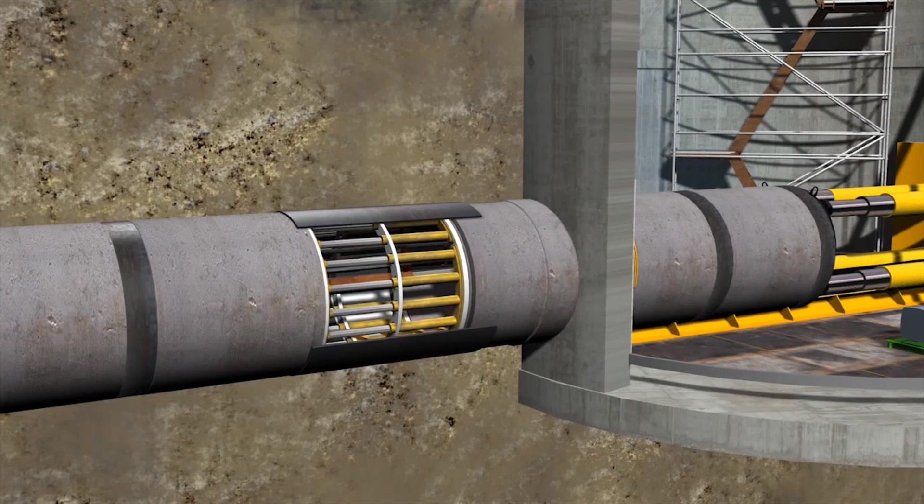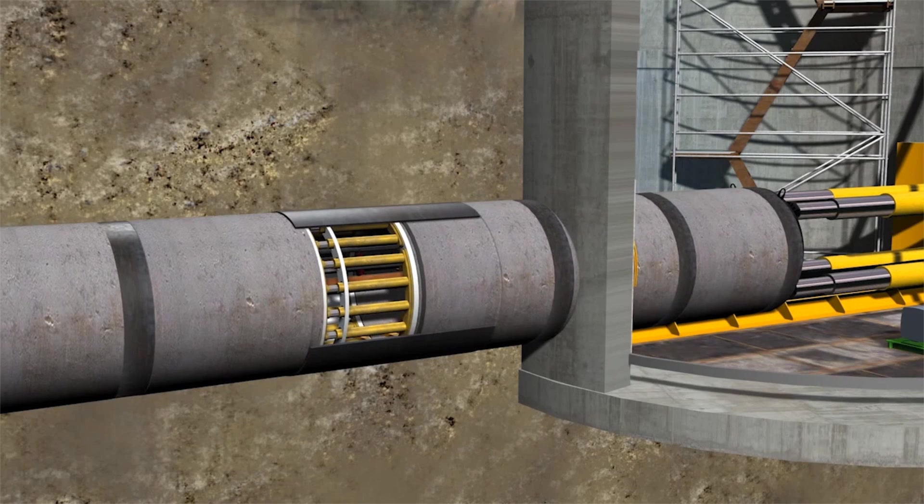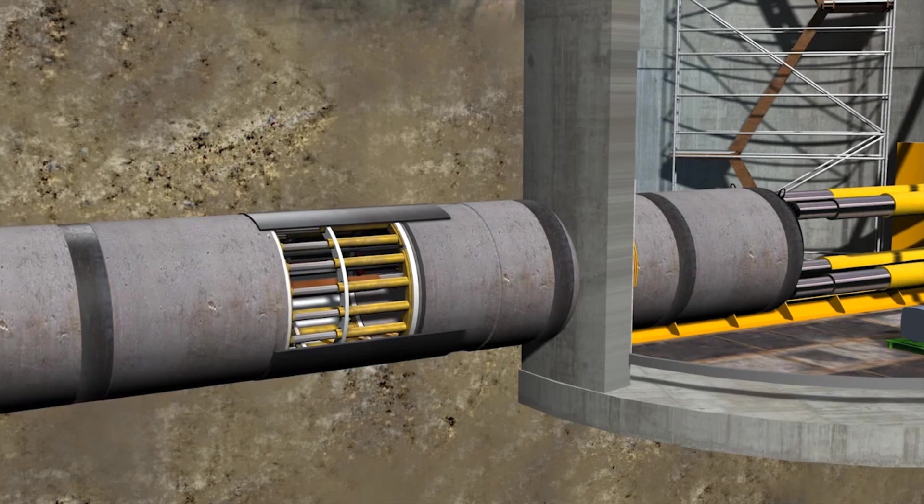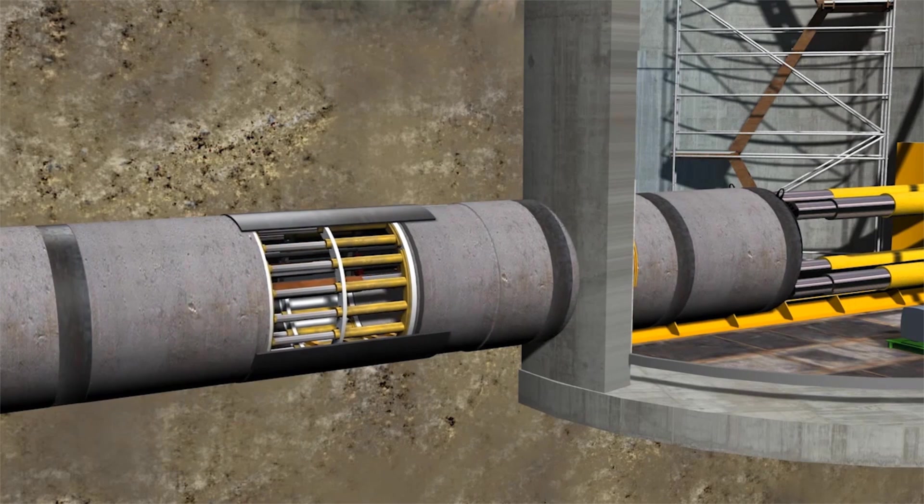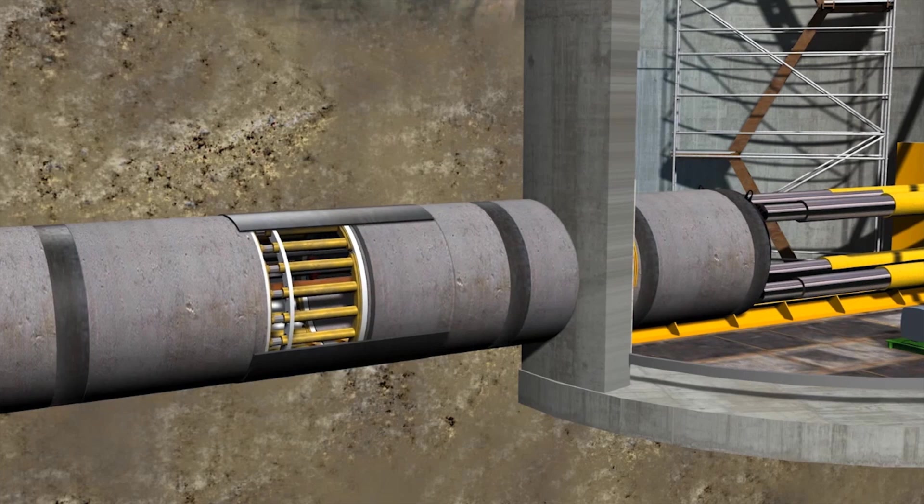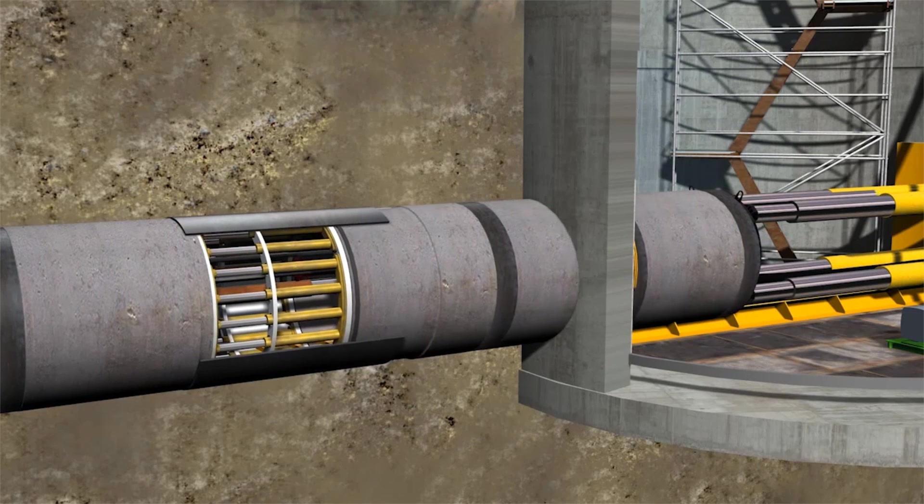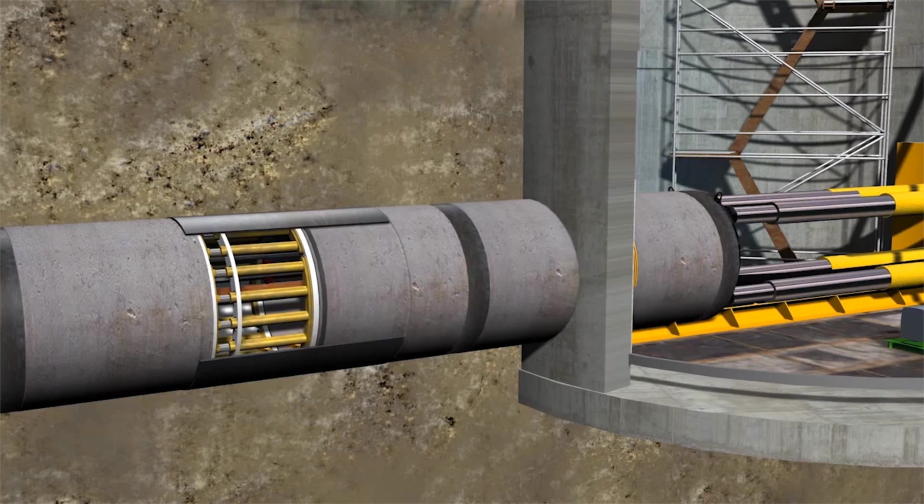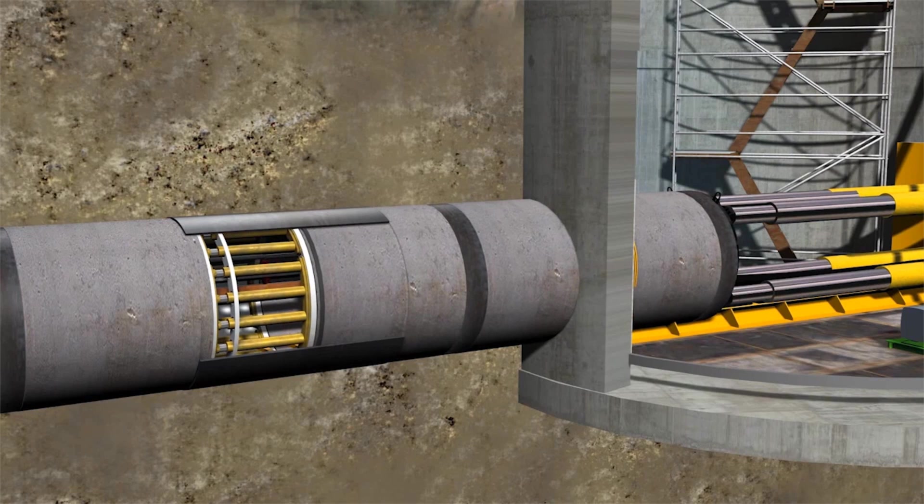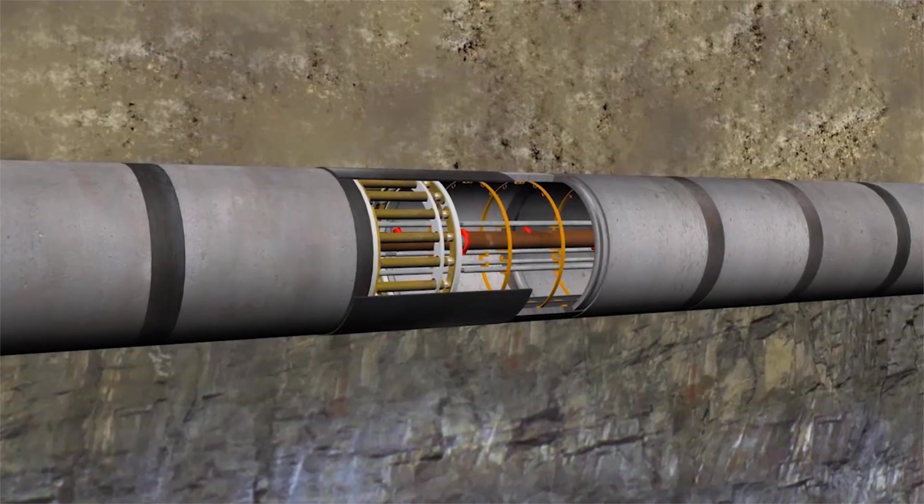Intermediate jacking stations are required to ensure that the permissible pipe jacking forces are not exceeded. These comprise a steel jacket with hydraulic cylinders mounted to the circumference and are integrated in the pipeline at regular intervals. The push force of the main jacking station then only has an impact up to the first intermediate jacking station. It is pushed together as the main jacks are extended.